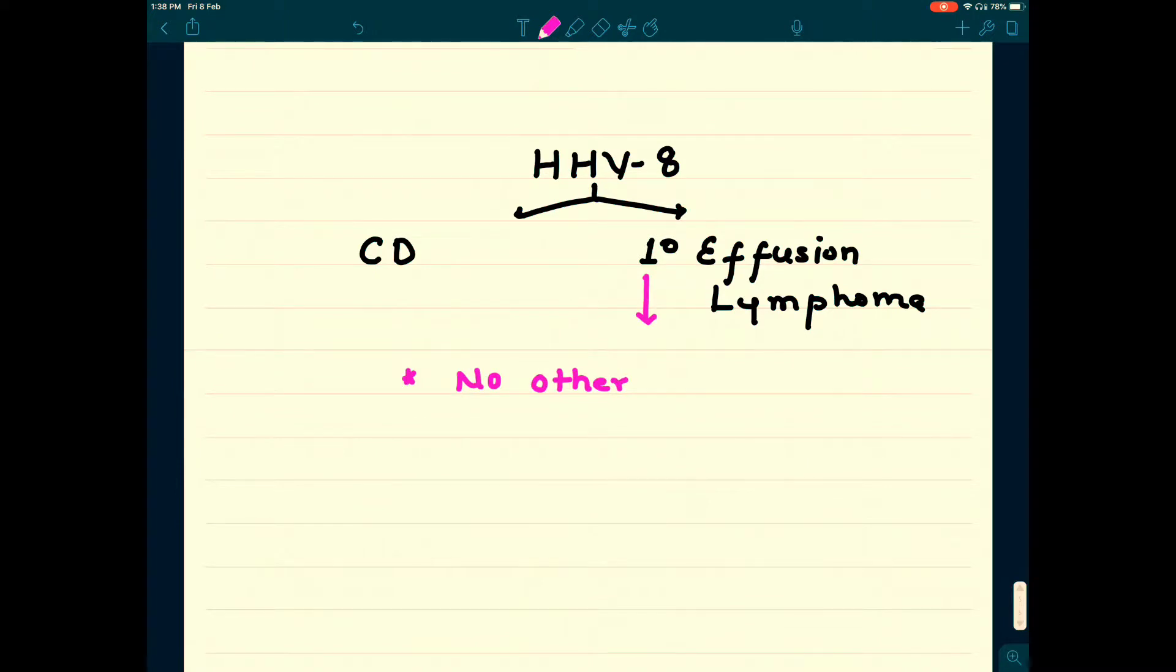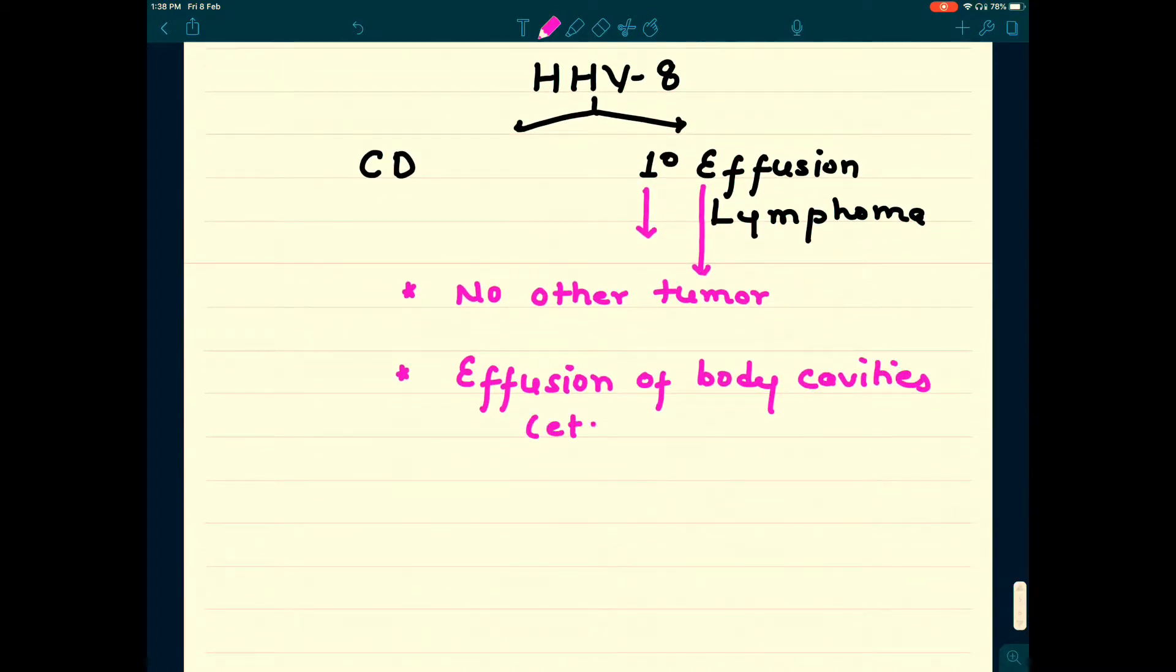Second pathological entity is primary effusion lymphoma. We call it primary because there is no other malignancy associated with this effusion. Effusion of the body cavity is very important in the history of your patient. There can be pleural effusion or ascites, but you won't find any lung malignancy or abdominal malignancy history associated in a case of primary effusion lymphoma.